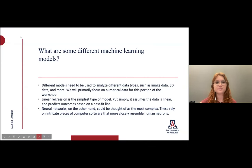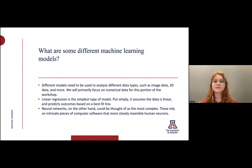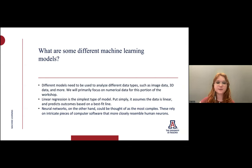What are some different machine learning models? You can use different models to analyze different data types such as image data, 3D data, and more. We will primarily focus on numerical data for our example. The simplest type of model is linear regression — it assumes the data is linear and predicts outcomes based on a best fit line. On the other end of the spectrum are neural networks, which are the most complex, relying on intricate software that closely resembles human neurons, but at their core both try to find patterns in data.